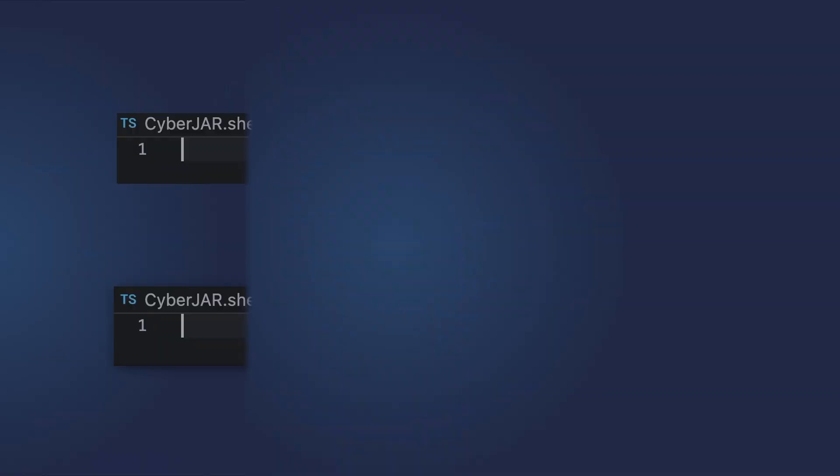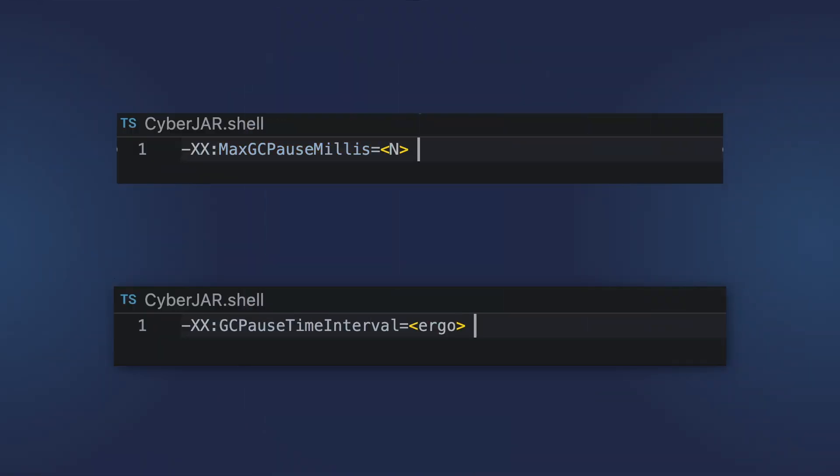G1GC performs collection using evacuation — it copies and compacts objects from one or several regions into other regions, avoiding memory fragmentation. You can also tune this collector by setting pause times, pause intervals, and so on. ZGC was first introduced in Java 11.